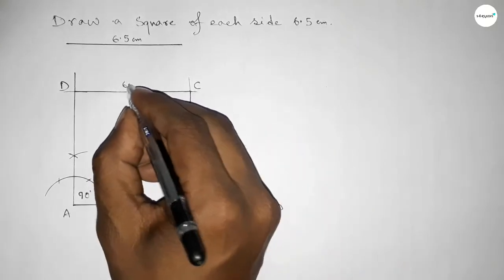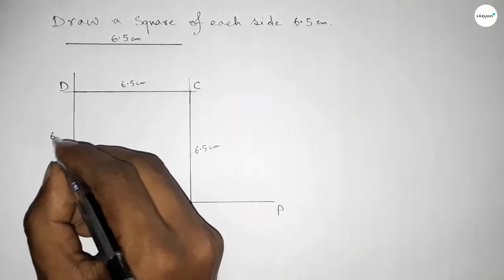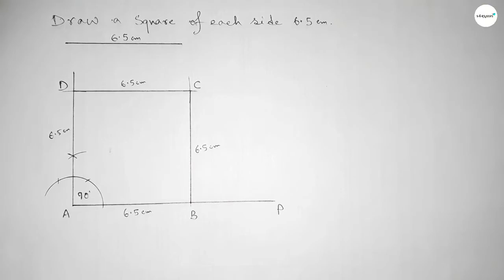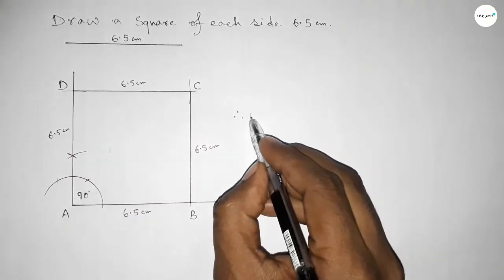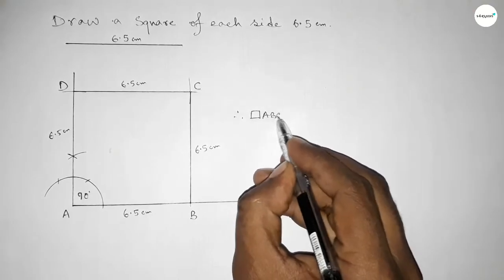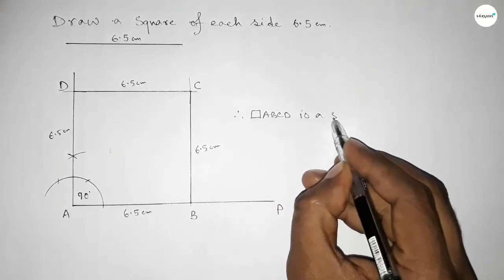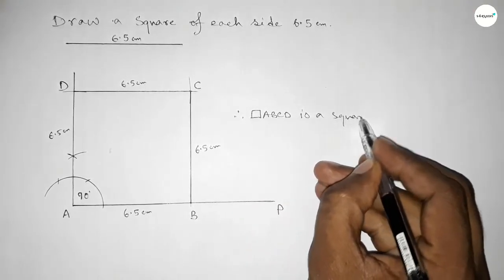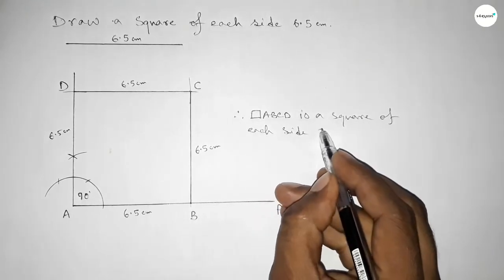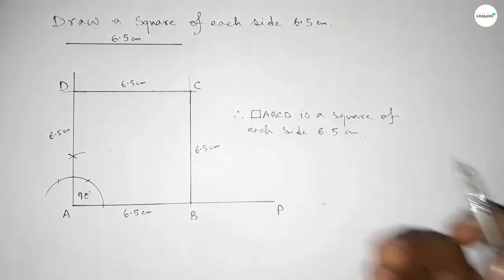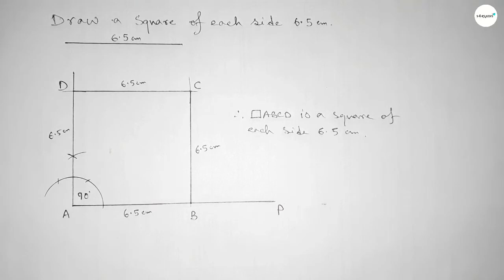This side is 6.5 centimeters and this side is also 6.5 centimeters. Therefore, ABCD is a square of each side length 6.5 centimeters. That's all — thanks for watching. If this video is helpful to you, please share it with your friends.